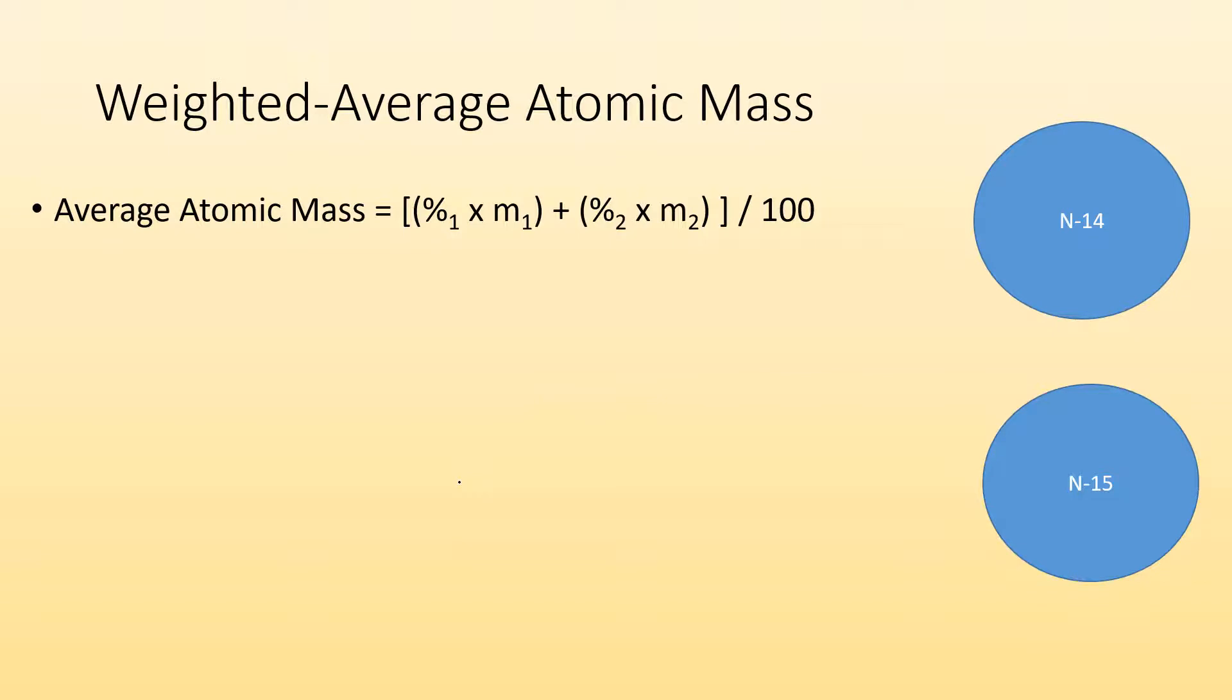So let's take a look at what the simplified equation would be. Average atomic mass is going to be equal to the percent of isotope 1 times the mass of isotope 1 plus the percent of isotope 2 times the mass of isotope 2 divided by 100. If there were four isotopes, then you would just continue this pattern on. It would be also plus the percent of the third one times the mass of the third one plus the percent of the fourth one times the mass of the fourth one. And that's just how you would do that.